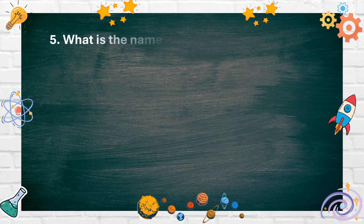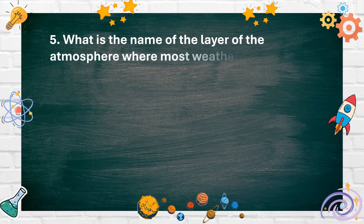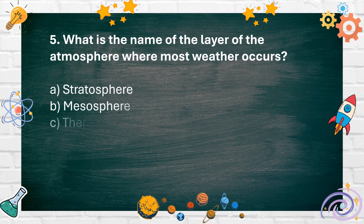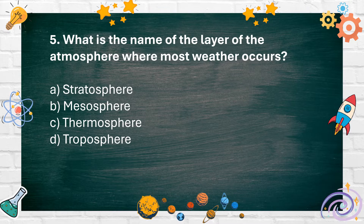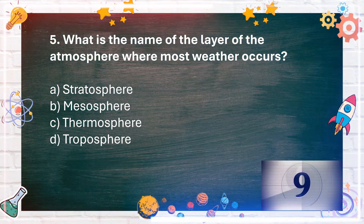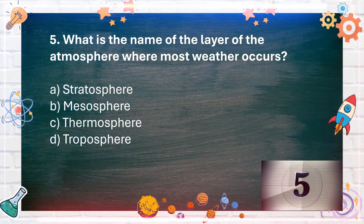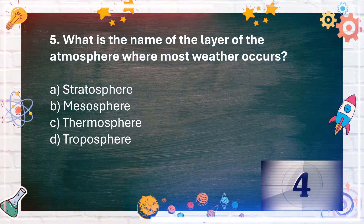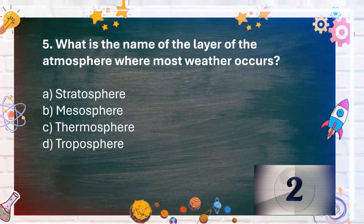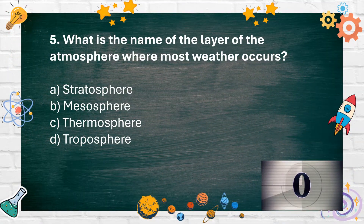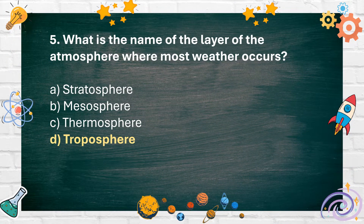Number 5. What is the name of the layer of the atmosphere where most weather occurs? A. Stratosphere. B. Mesosphere. C. Thermosphere. D. Troposphere. The answer is D. Troposphere.